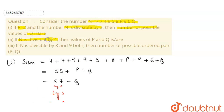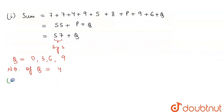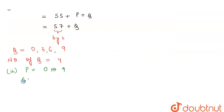The second part asks: if N is divisible by 4, find the values of p and q. The divisibility rule of 4 states that the last two digits should be divisible by 4, which means 6q should be divisible by 4. The rest of the number can be anything, so the value of p can be from 0 to 9. We only need to find the value of q.